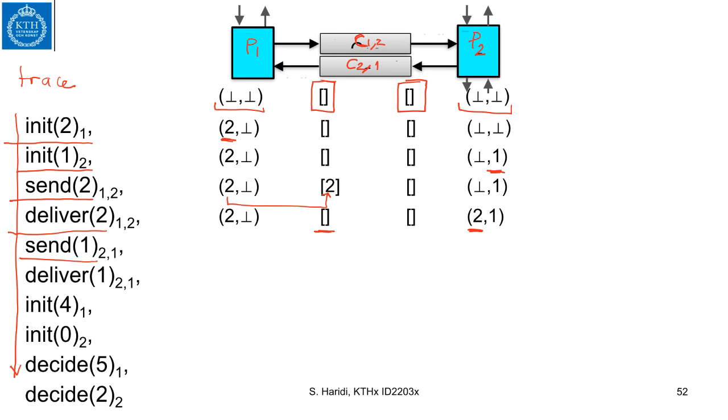Then we do a send again, and this on the channel c21. So we have the value here. It's sending its own value, one. It's there. And then we do a delivery for that, so now this value is delivered to process p1 at this position.